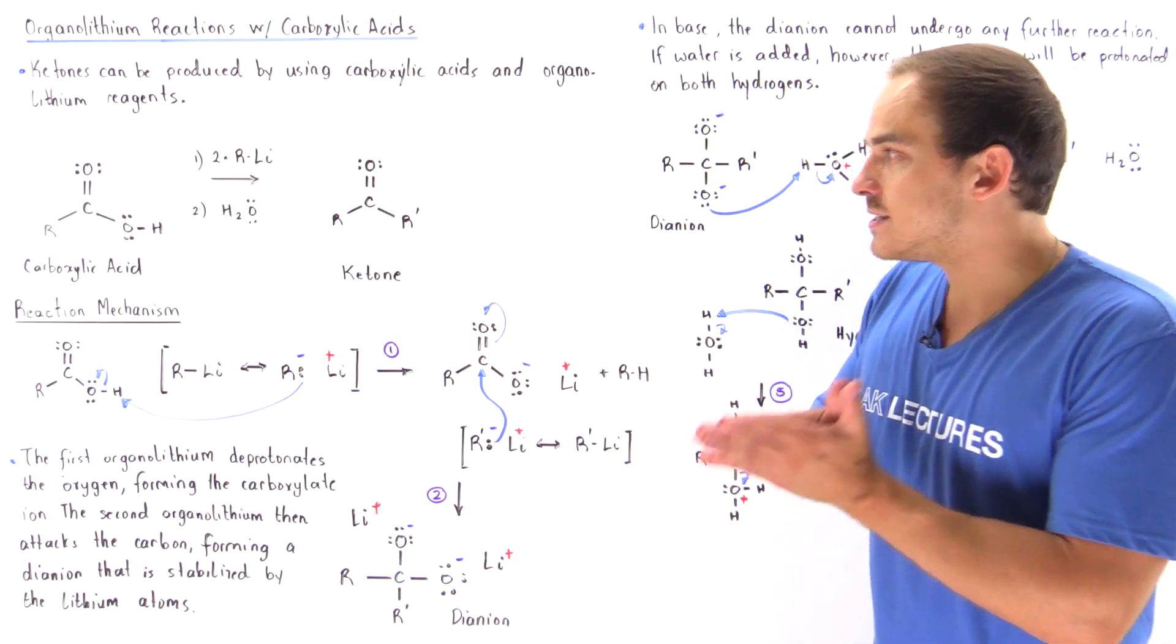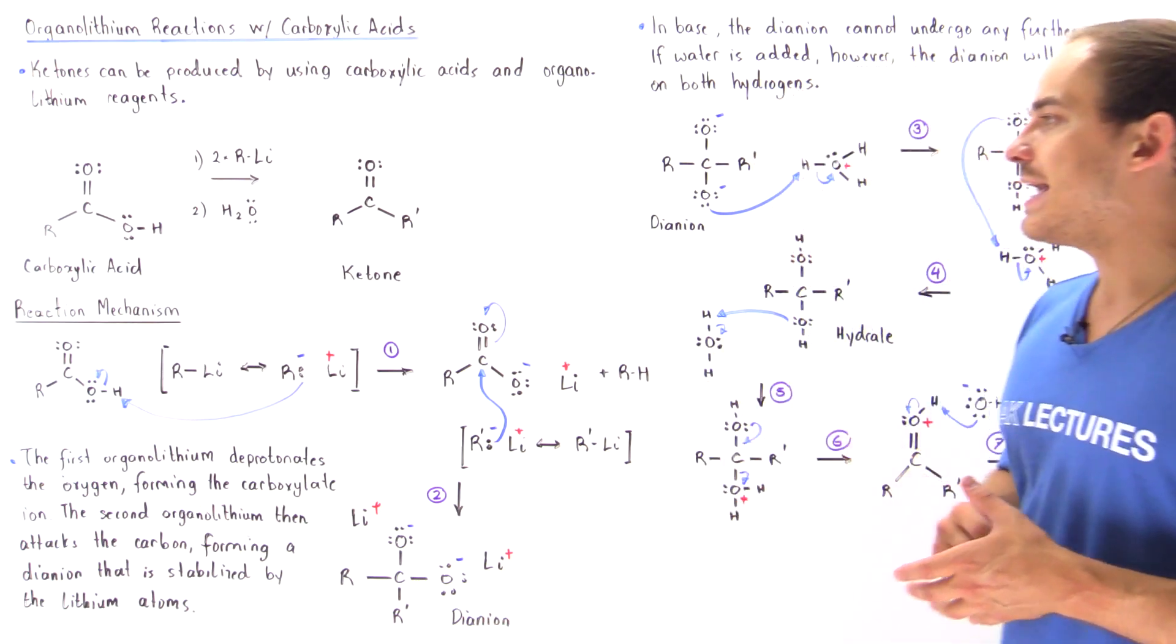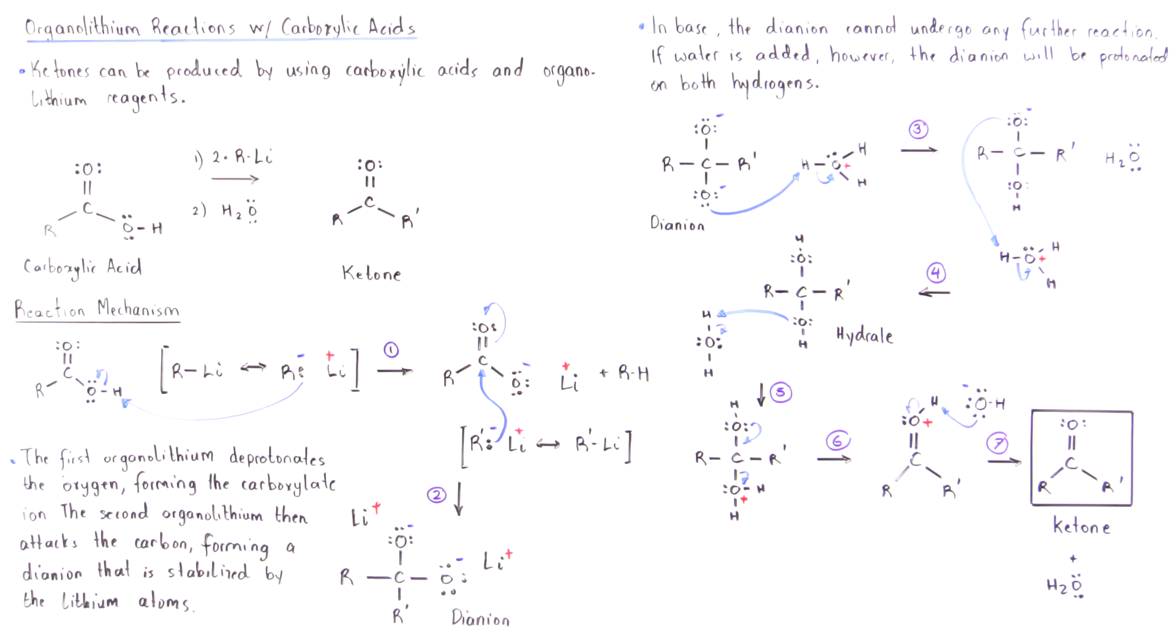In the second series of steps, if we take our di-anion and mix it with water, we eventually produce the final product, our ketone.